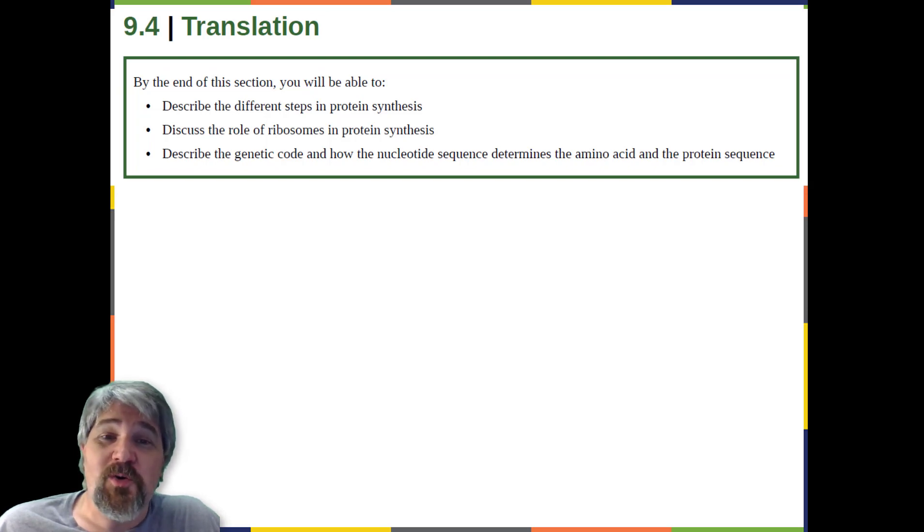The process of translation, or protein synthesis, involves decoding a messenger RNA message into a polypeptide product. Amino acids are covalently strung together in lengths ranging from approximately 50 amino acids to more than a thousand.